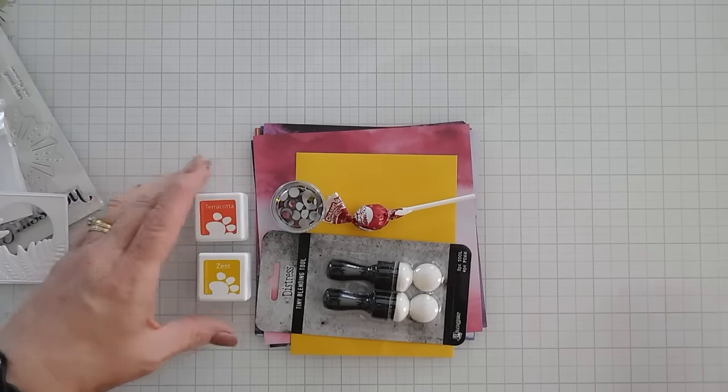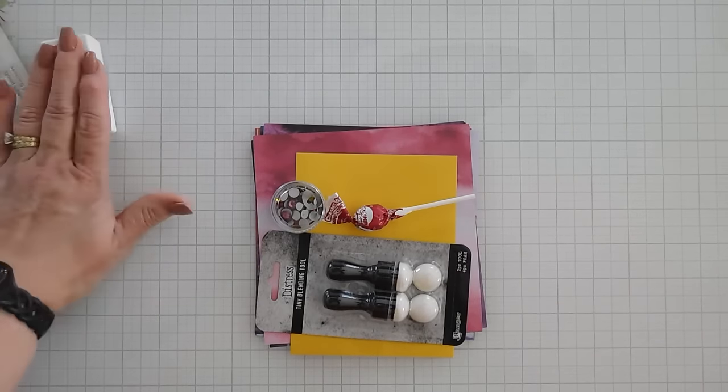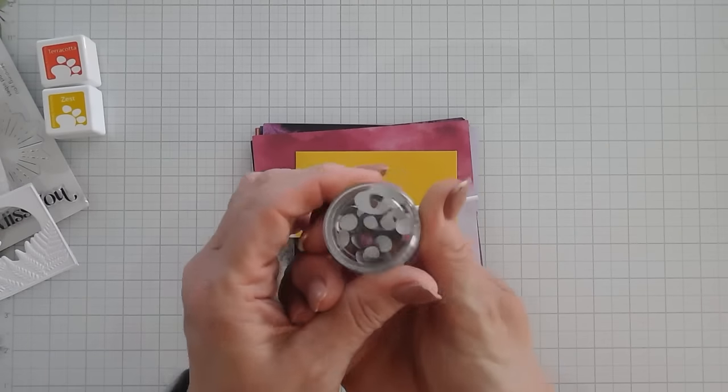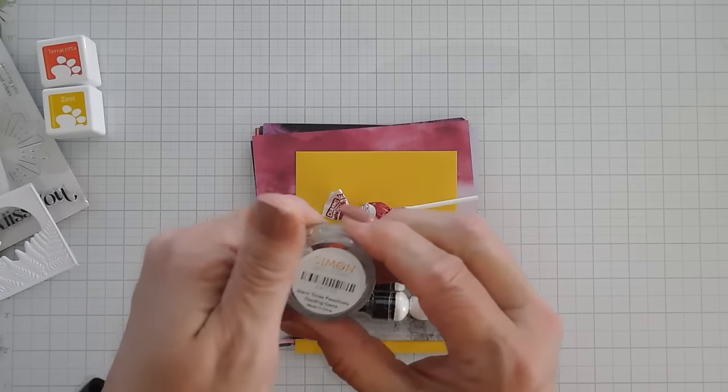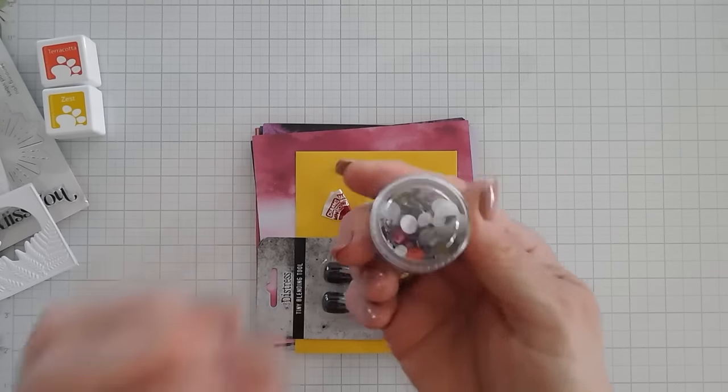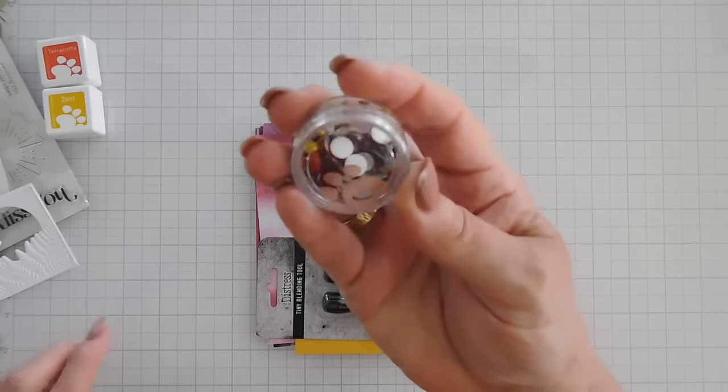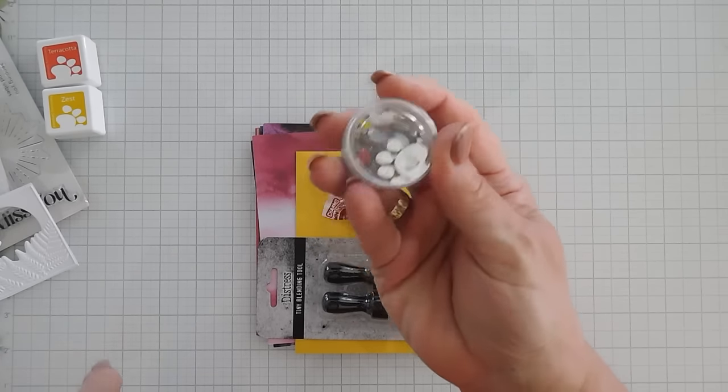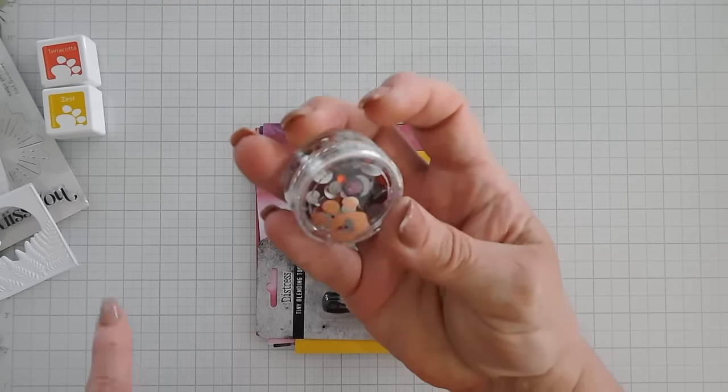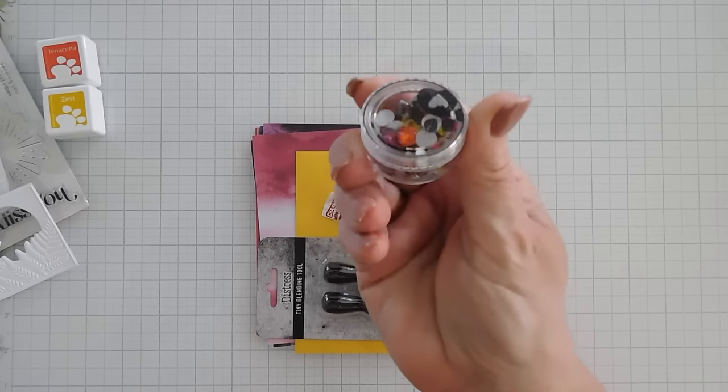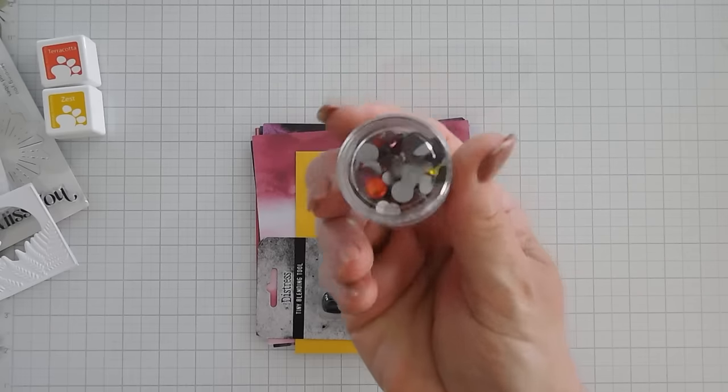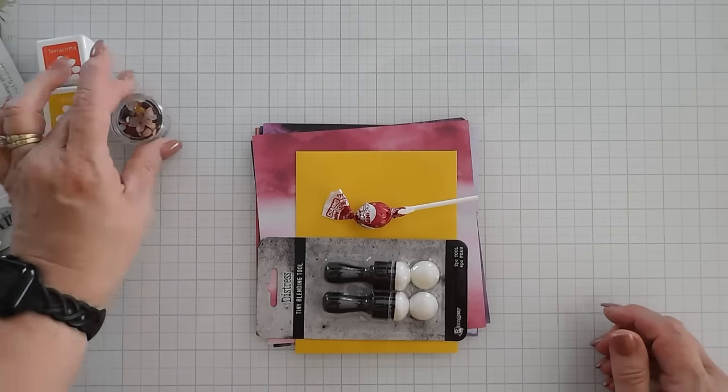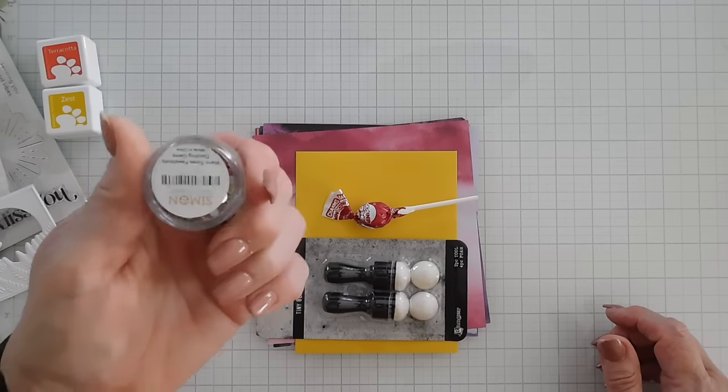So you get two ink cubes and you also get some gems. These are Simon Says Stamps warm tones positively dazzling gems. Warm tones means there's yellows, oranges, plums, reds, and I think that's about it. So you get a nice variety of sizes and colors in here. And I love the little case that they come in.